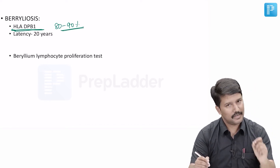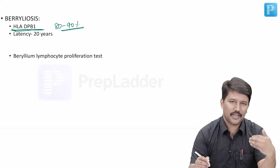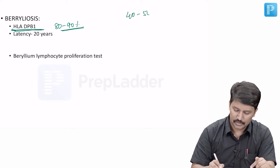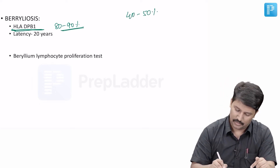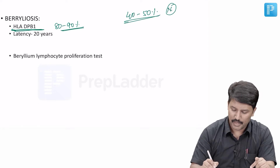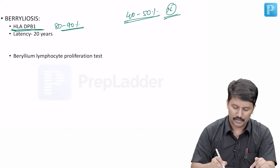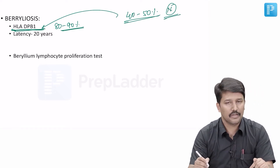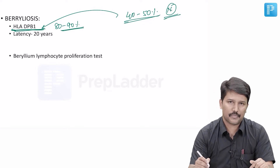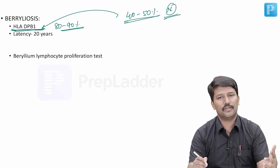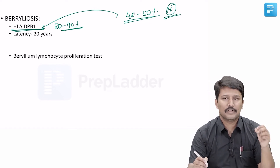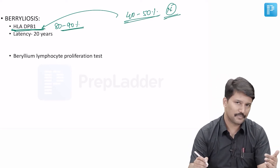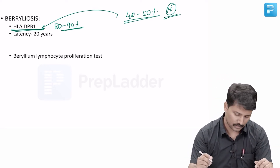But its diagnostic utility is very limited because 40 to 50 percent of the normal population may also have this HLA variant HLA-DPB1. So the presence, though strongly associated with berylliosis, does not give us a diagnostic edge — we can't rely on it.